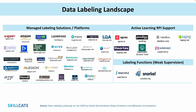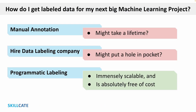In fact, there are hundreds of startups in the market today that provide data labeling services and actually charge you for it. So the big question really is, how do I get labeled data for my next big machine learning project? Do I manually annotate it, which might take a lifetime? Or do I hire a data labeling company, which might put a hole in my pocket? Well, there is indeed a third option available called programmatic labeling, which is immensely scalable and is absolutely free of cost.